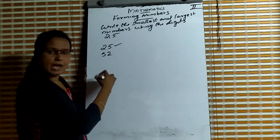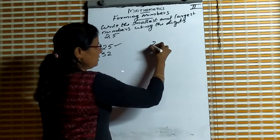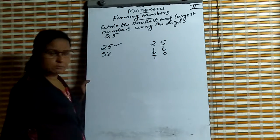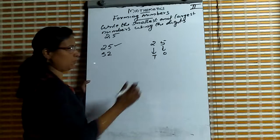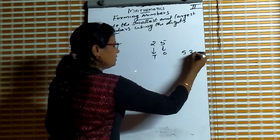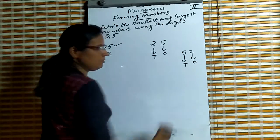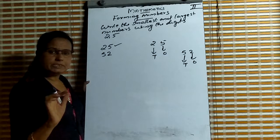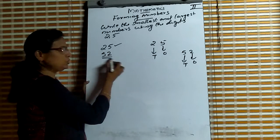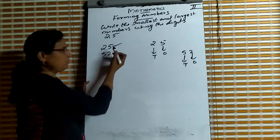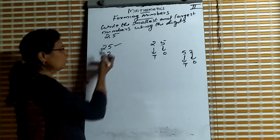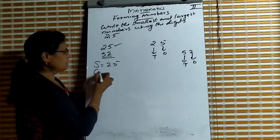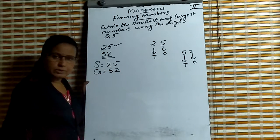One is 25 and another is 52. 25 means 5 is in the 1's place and 2 is in the 10's place — two 10's and five 1's is 25. And 52 means five 10's and two 1's. Now, 52 is the greatest number and 25 is the smallest number. So, using 2 and 5, the smallest number is 25 and greatest number is 52.